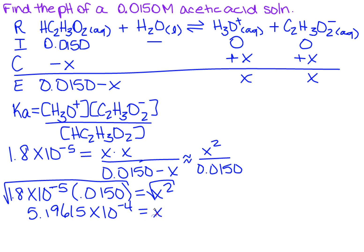How do I check to make sure that it's legal that I went ahead and made the approximation? I take the number that I just got, 5.19615 times 10 to the minus 4th, divided by the concentration, which was 0.0150, times 100. When I do that, I get 3.46%, which is less than 5%. So it was okay for me to make that call.